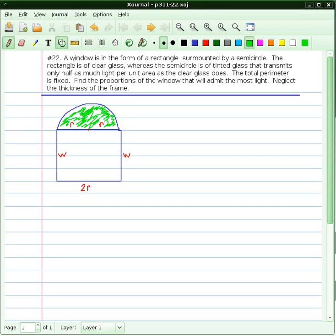We're working on an optimization problem from calculus, number 22 in our textbook. It states: A window is in the form of a rectangle surmounted by a semicircle. The rectangle is of clear glass, whereas the semicircle is of tinted glass that transmits only half as much light per unit area as the clear glass does.